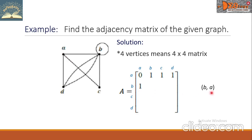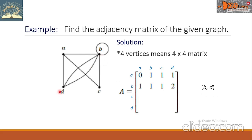Next, BA. This is vertex B and vertex A. There is one edge connecting the two vertices, so we write here 1. Next is BB. We are looking for a loop in vertex B. There is one loop here, so we write 1. Next, BC. This is vertex B. This is vertex C. The two vertices are connected by one edge, so we write here 1. Next, BD. This is vertex B. This is vertex D. There are two edges connecting the two vertices, so we write here 2.